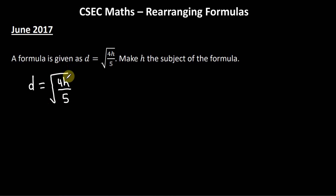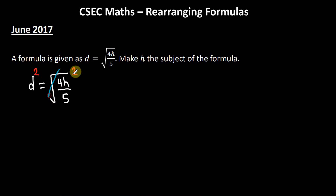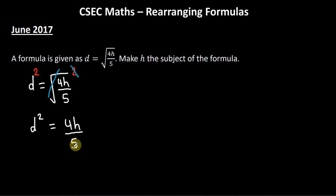The square root encloses the entire fraction, so I'll get rid of the square root symbol by doing the opposite — squaring both sides — to keep both sides balanced. The square root sign cancels the square symbol, and we're left with d² = 4h/5.